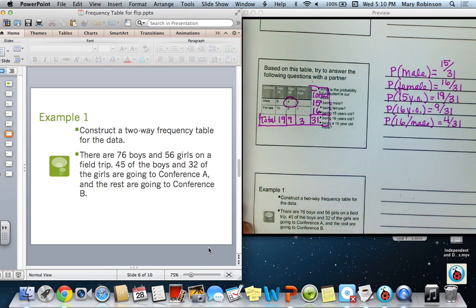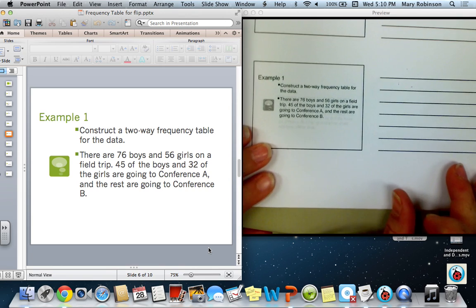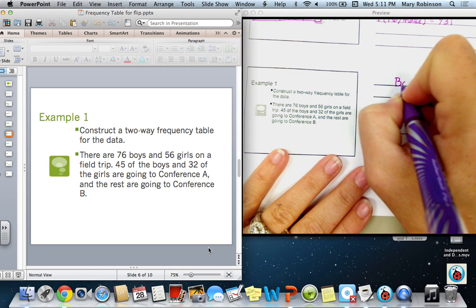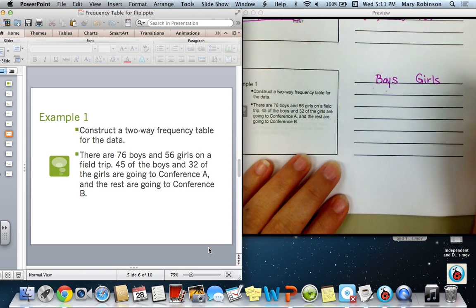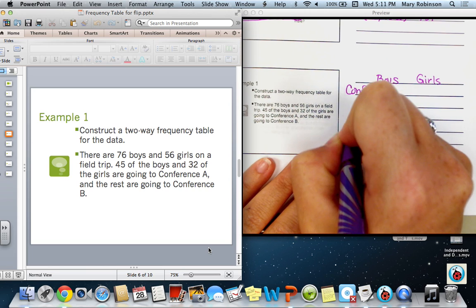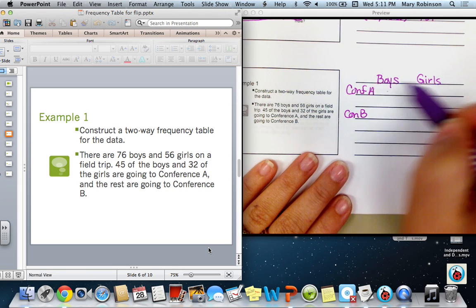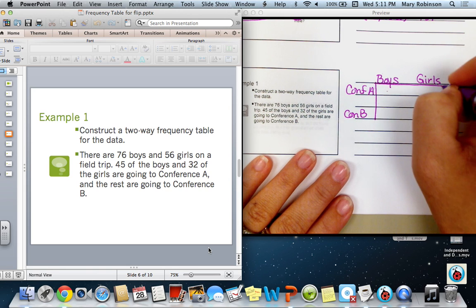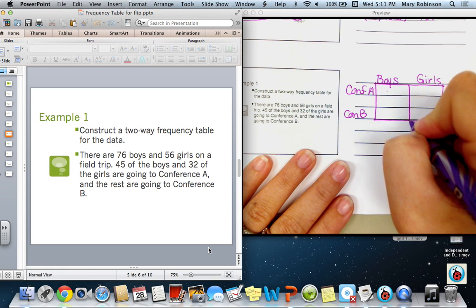What you will also be asked to do is to construct your own two-way frequency tables. So what we are told in this paragraph is that there are 76 boys and 56 girls on a field trip. 45 of the boys and 32 of the girls are going to Conference A and the rest are going to Conference B. So we have two headings we need to consider. The fact that we have boys and girls and also that there are two conferences, Conference A and Conference B. So it doesn't matter which you put on the top and which you put on the bottom. This was of my choosing. So if you switch the boys and girls with the Conference A and B that's fine also as long as your numbers come out the same.